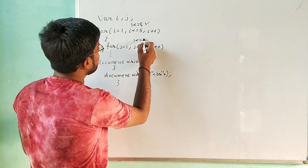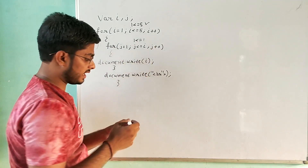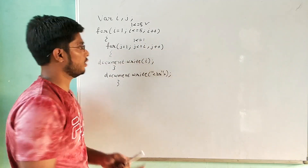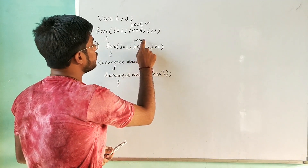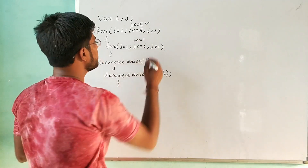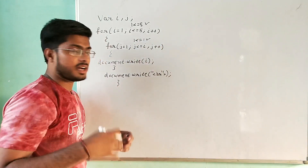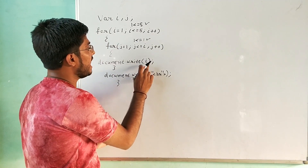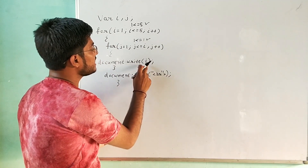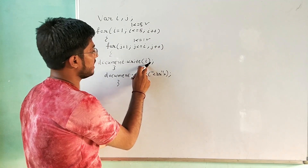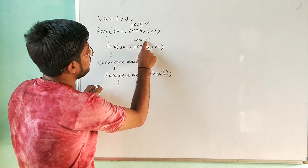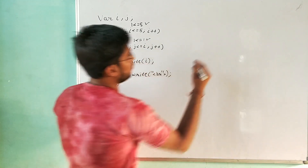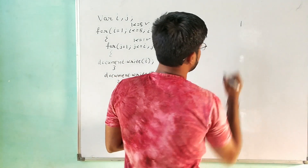Since the condition is true, it executes the document.write statement and prints the value of i, which is 1. So we have 1 printed here. Next, it increments j: j was 1, now j is 2. It checks again: is 2 less than equals to 1? No, condition is false. So the block will not execute and it will not print the value of i.